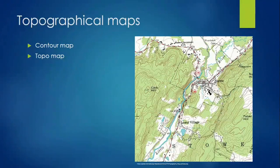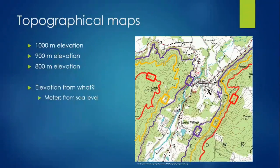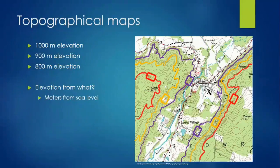These maps are covered in curving lines that are sometimes close together and sometimes spaced apart. Today, we're going to learn how to read topographical maps. I've highlighted some of the contour lines on this map. Purple lines denote 800 meter elevation, yellow 900 meters, and red 1000 meters.